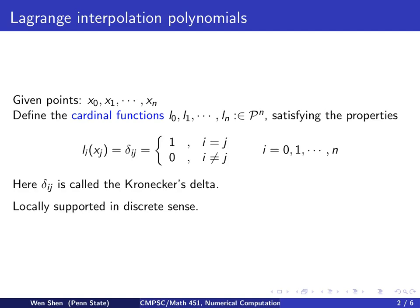In other words, the cardinal function number i takes value 1 at xi and takes value 0 on all the other points. So this is something we call a locally supported feature in a discrete sense.